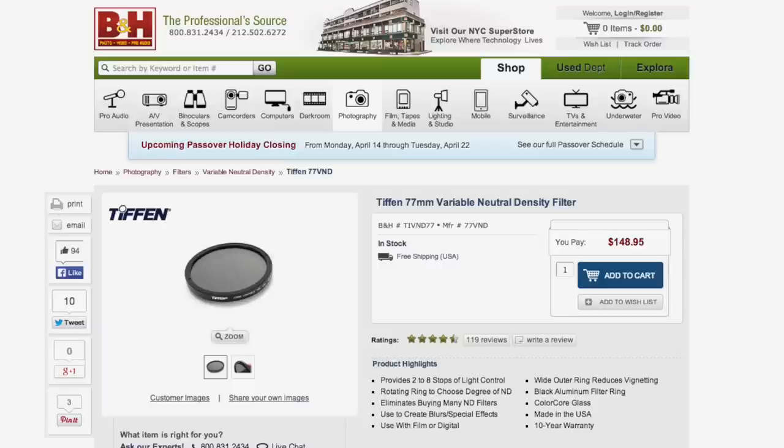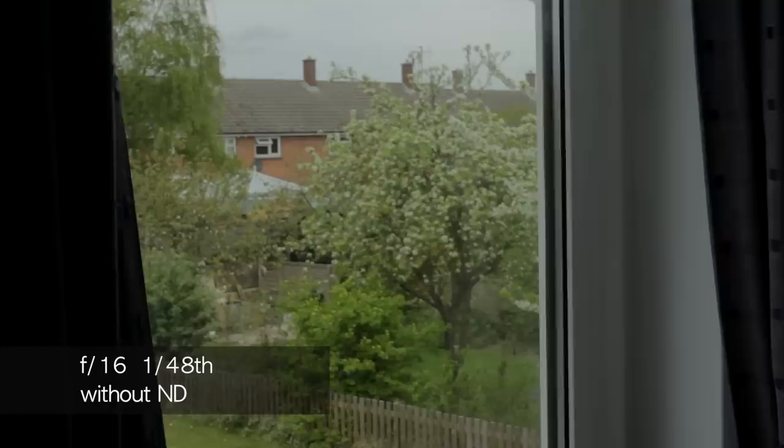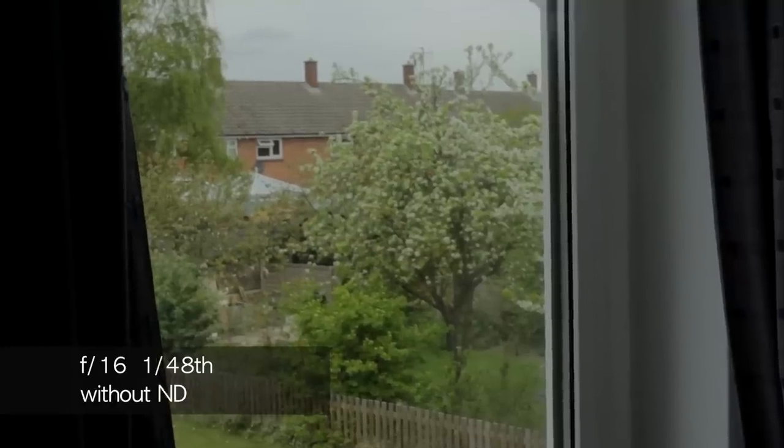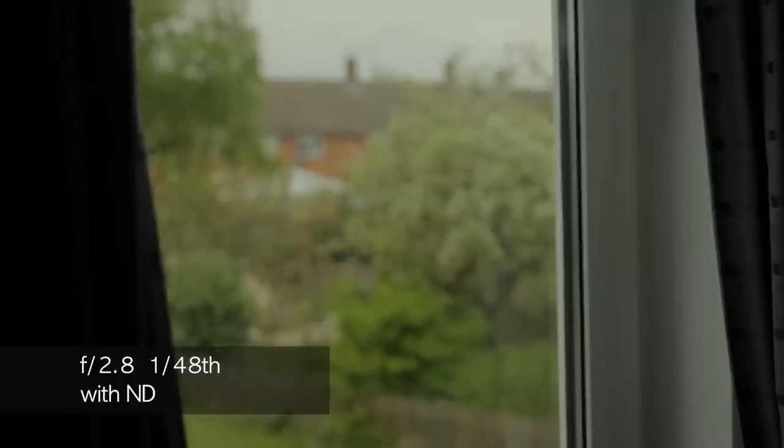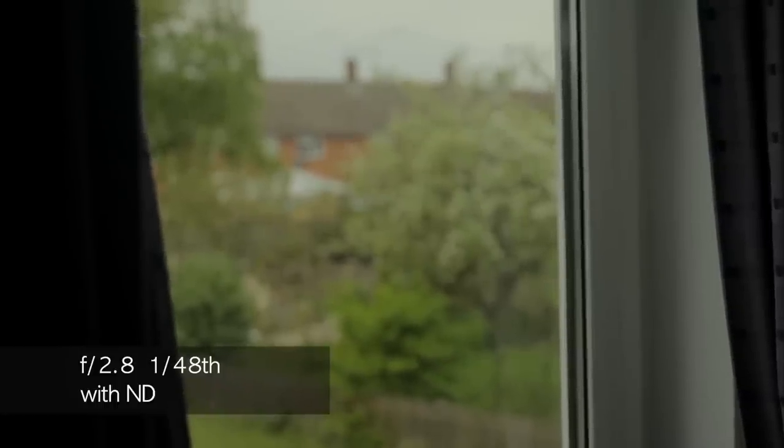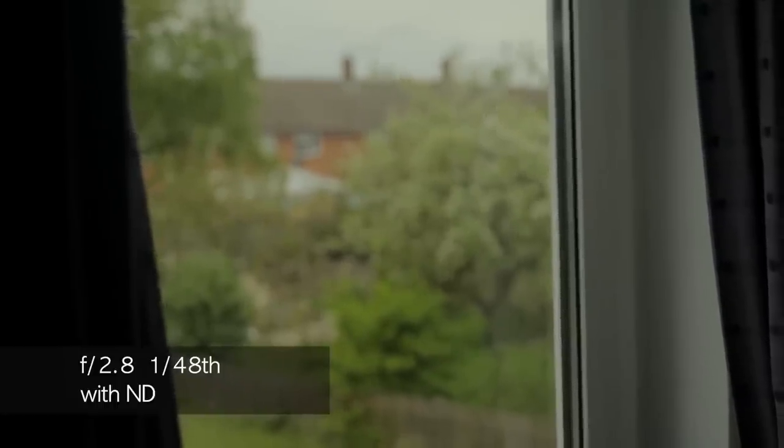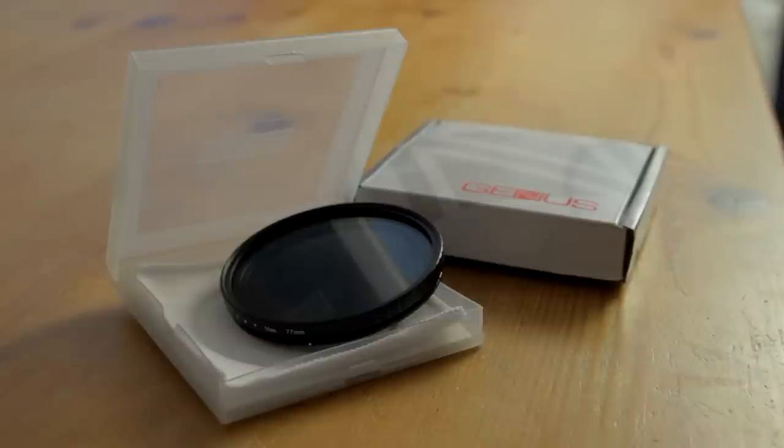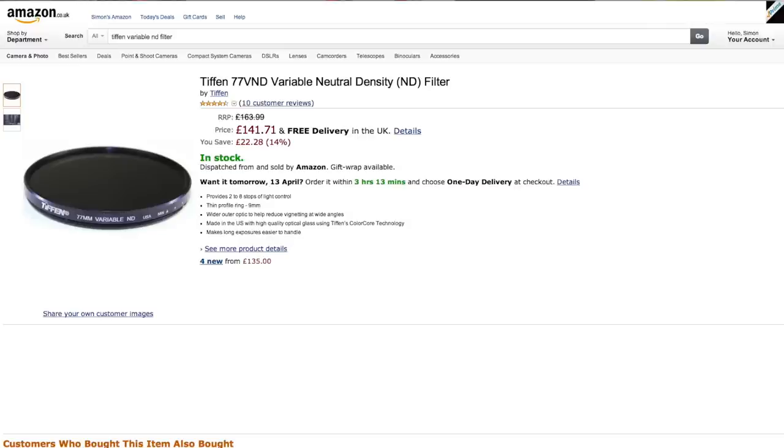So the final thing on my list is the Tiffin Variable ND filter and a lot of people are going to want to have the ability to get a shallow depth of field when you're outdoors or in some other brightly lit situation and that's where the Variable ND filters work really well. Now, for some reason this filter is really difficult to find in the UK so if you are in the UK then I'd recommend that you look into it yourself but you might want to get the Genis ND filter instead which isn't quite as good but for some reason the Tiffin one just costs tons over here.